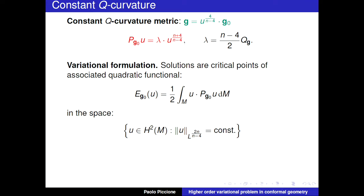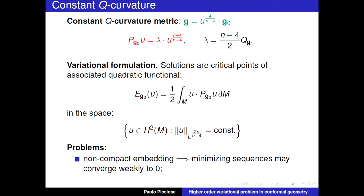As in the Yamabe problem, metrics with constant Q curvature are characterized as critical points of the quadratic functional associated to the Paneitz operator, restricted to the unit sphere in H^2. This is hard because the embedding of H^2 into L^(2n/(n-4)) is non-compact, so minimizing sequences can converge weakly to zero, giving bubbling. There is also another problem: minimizers may not be positive functions, meaning they don't define a conformal class. This is because there is no maximum principle for fourth-order elliptic operators.